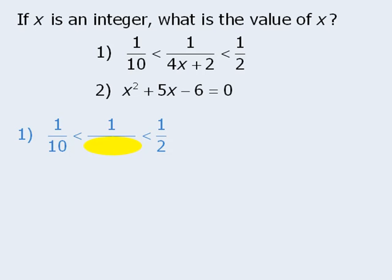Furthermore, since x must be an integer, the yellow denominator must be an integer, which means it can be any integer from 3 to 9 inclusive. In other words, 4x plus 2 can equal any integer from 3 to 9 inclusive.